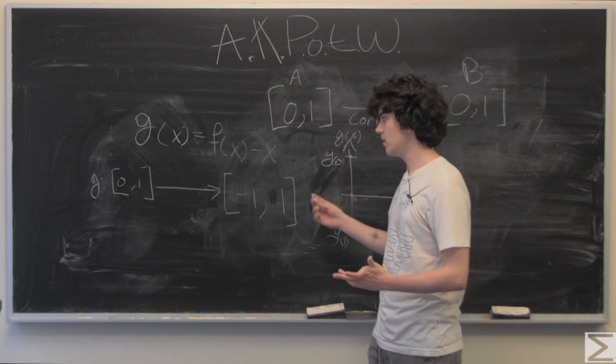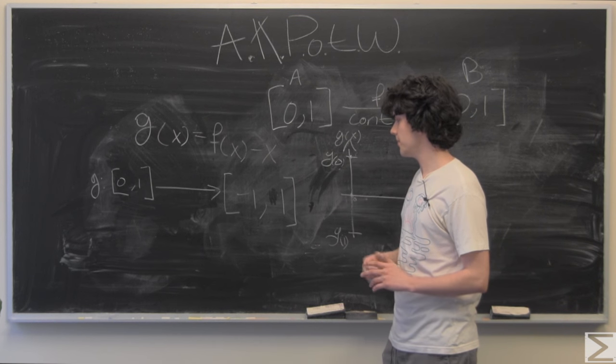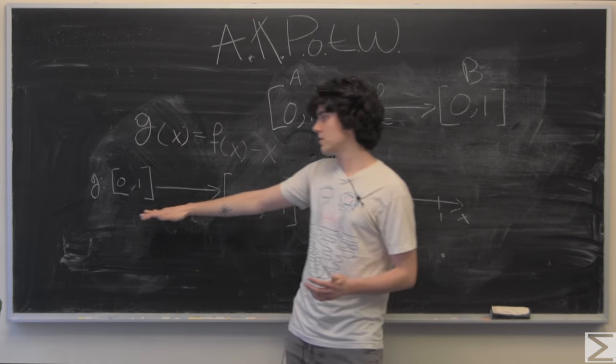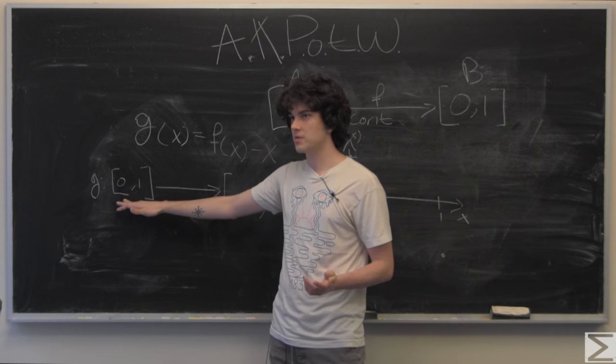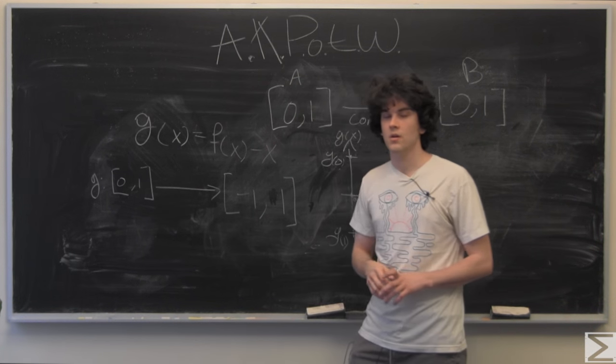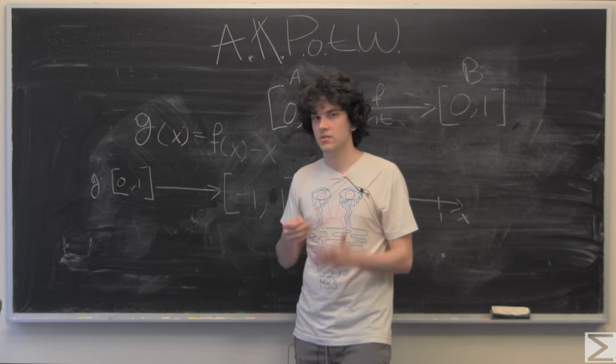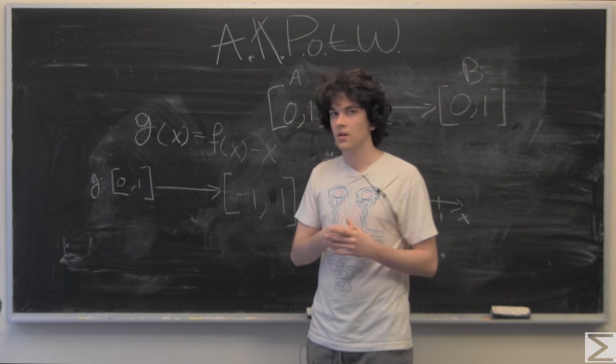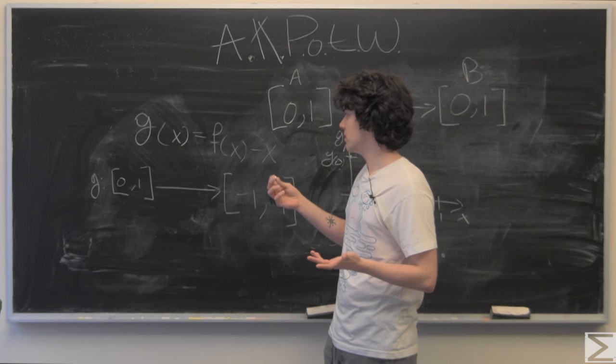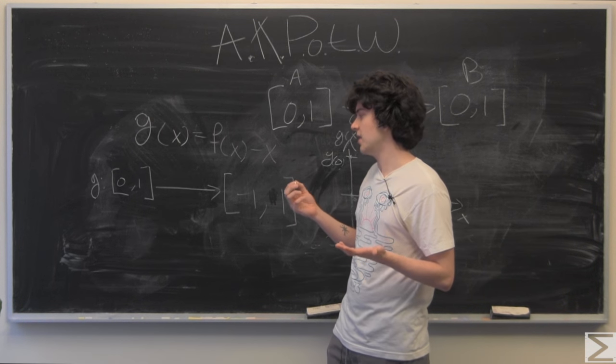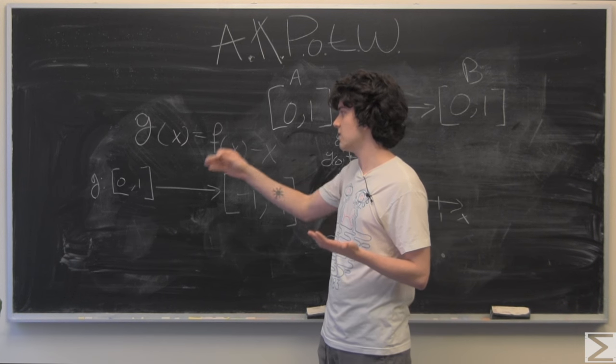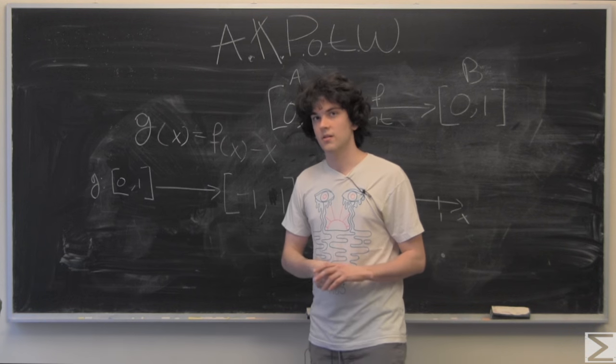And so zero is between negative 1 and 1. So since g is continuous, there's going to exist a map from some x in here to 0, and you just choose whatever x that may be. Since this is an abstract equation, we can just say let x be an x such that g of x equals 0, and then you're done.